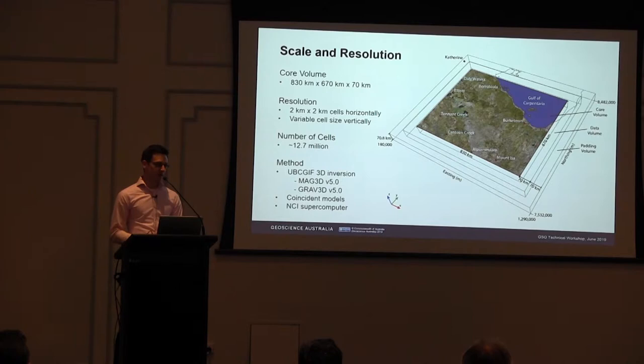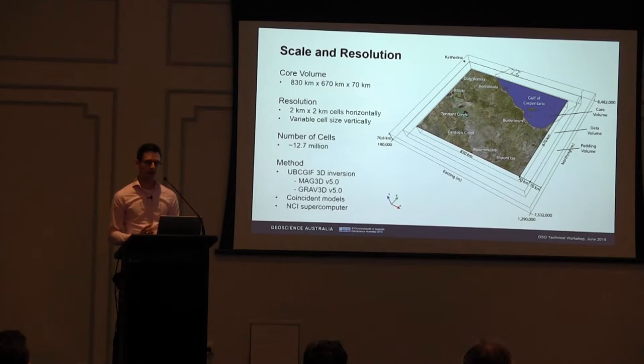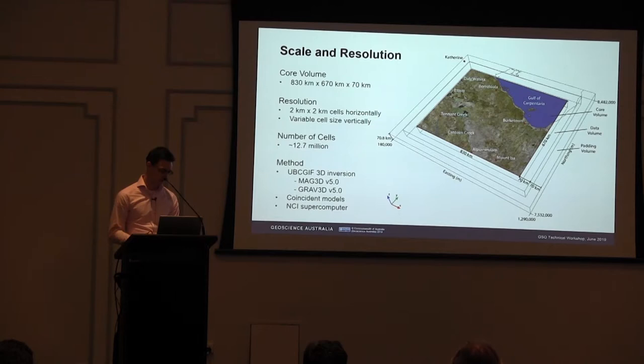That cell size means we need to upward continue our data to 2 kilometres, removing short wavelength information. That's not necessarily a bad thing, and I'll go into resolution more later. It's important to note the resolution of these models on such a large scale. We end up with a model that has 12.7 million cells.